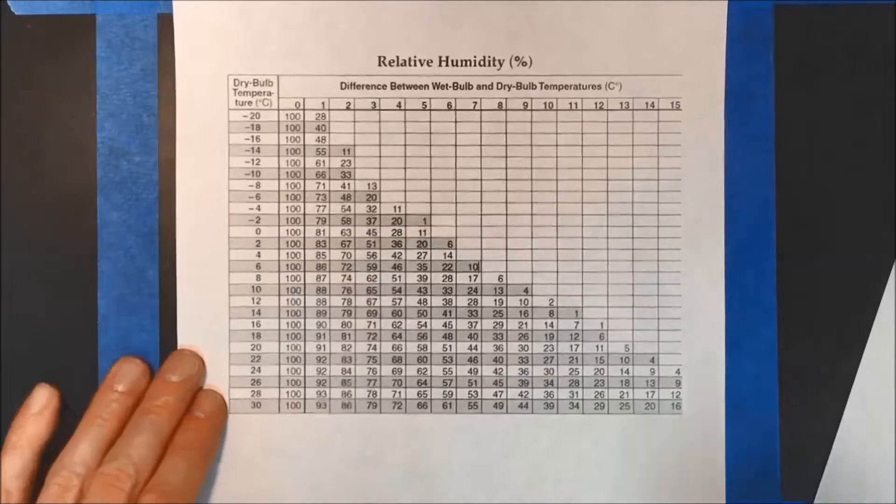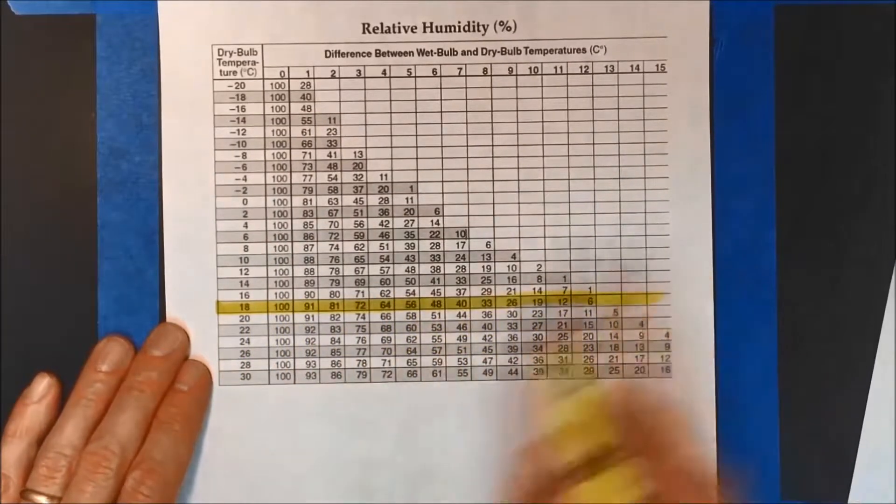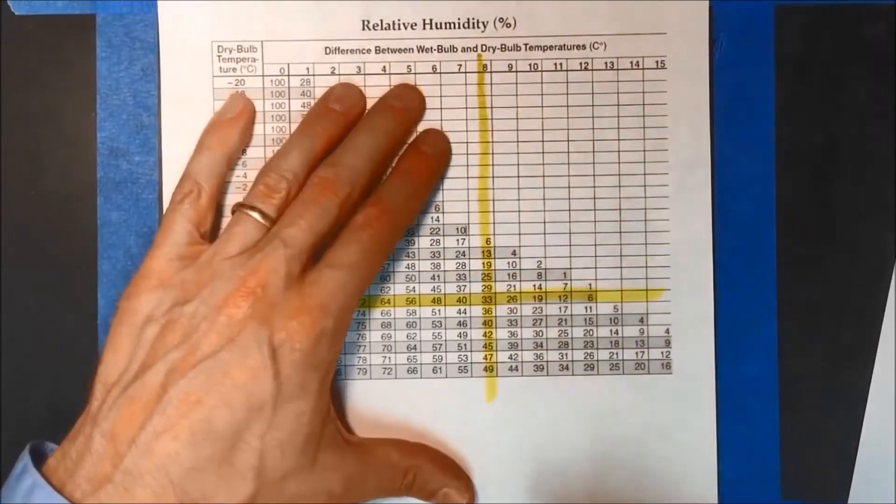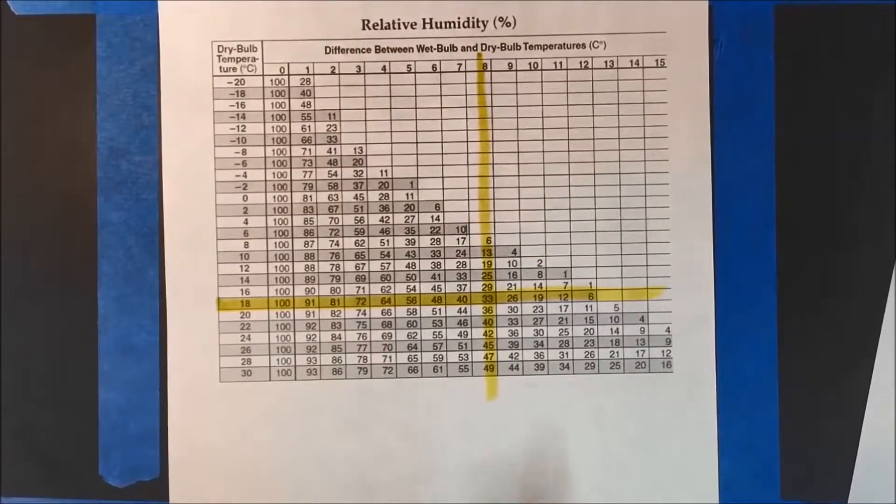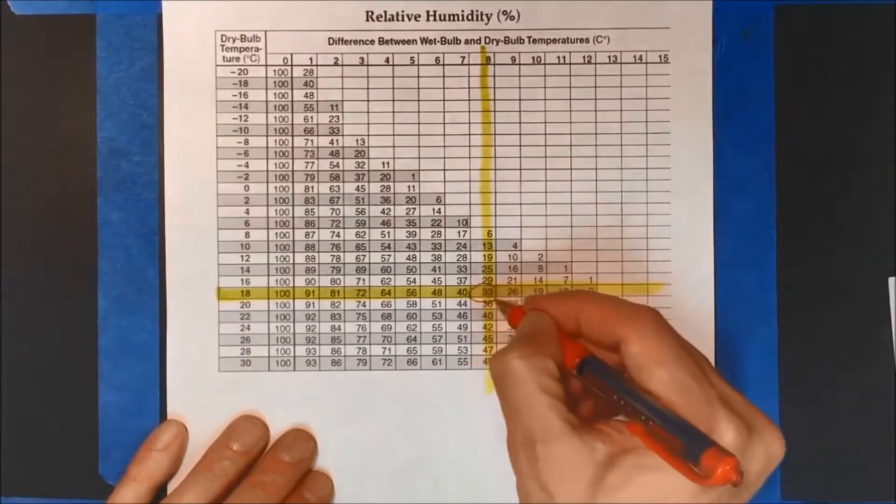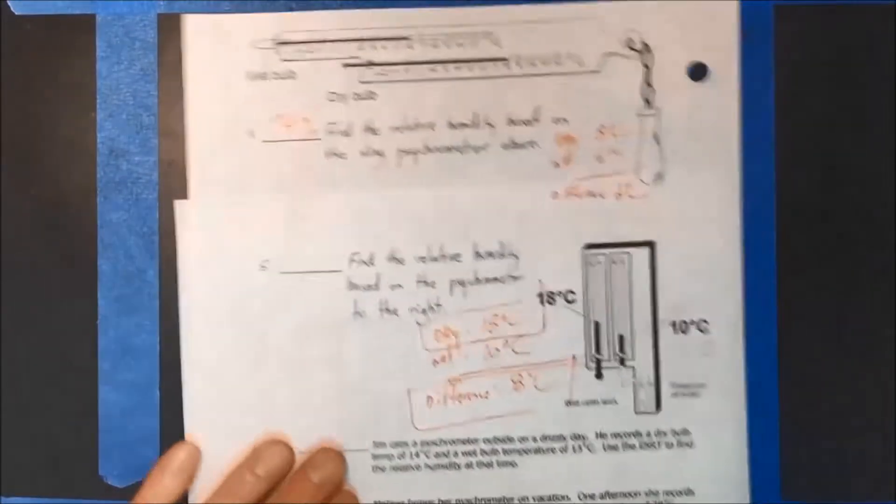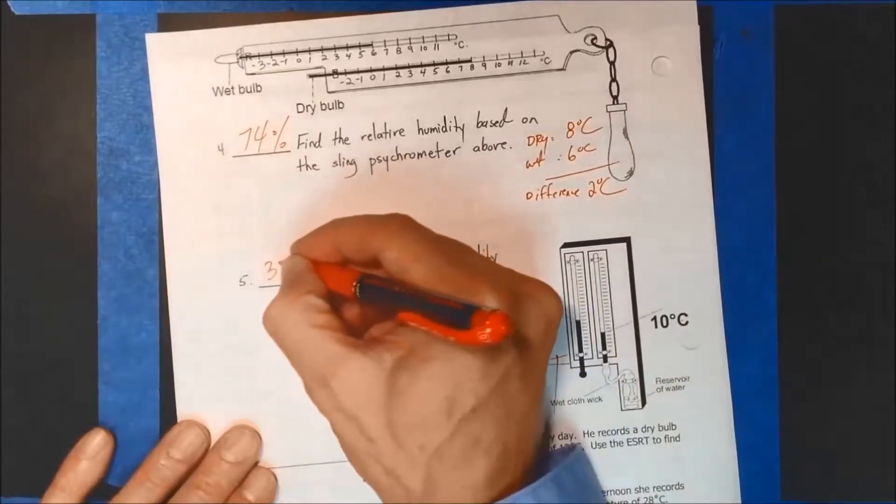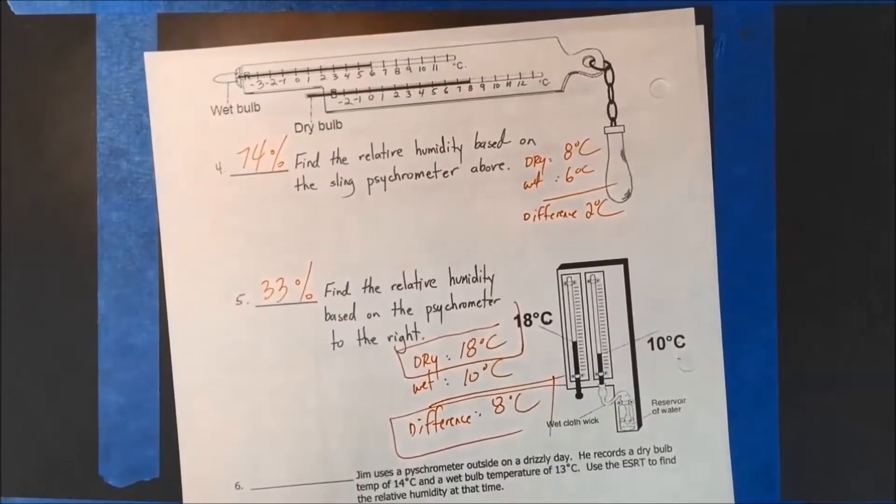And what are we doing? Dry is 18. Dry is 18 right here. And then the difference is 8. So that's kind of a big difference. That means there's a lot of evaporation on that wet bulb. There's a lot of evaporation. Therefore the air must be very dry in order to accept all that water vapor. And we can see it here as 33%. That's pretty low relative humidity. The air is 33% full of water vapor. And that's what this is. 33%.